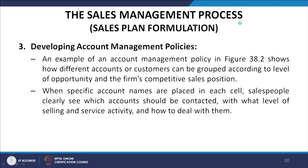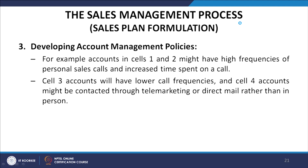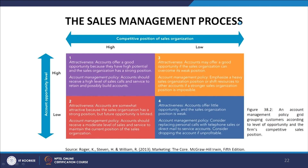An example of an account management policy is given in figure 38.2. It shows how different accounts or customers can be grouped according to level of opportunity and the firm's competitive sales position. When specific account names are placed in each cell, the salesperson clearly sees which accounts should be contacted with what level of selling and service activity. This is an account management policy grid grouping customers according to level of opportunity and the firm's competitive sales position.